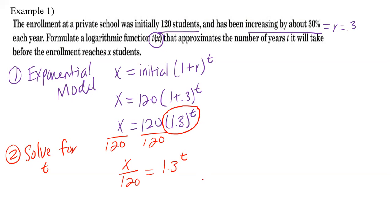Step two, yesterday we talked about taking the log, the common log of both sides. You all remember us doing that? That's so that we can free, quote unquote, the t. So we're going to take the log of both sides. By taking the log of both sides, I now have log of x over 120 equals t log 1.3.